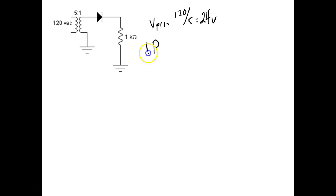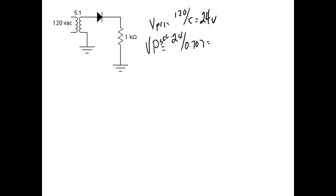Then I need to calculate V peak. So V peak would be equal to 24 divided by 0.707. We call this V peak secondary, just to get it straight. So we got 33.95 — this is volts peak, but this is on the secondary.